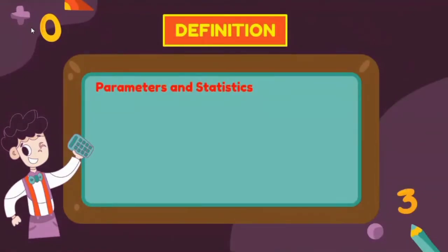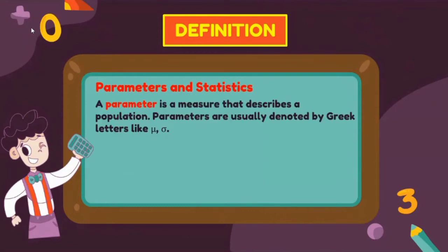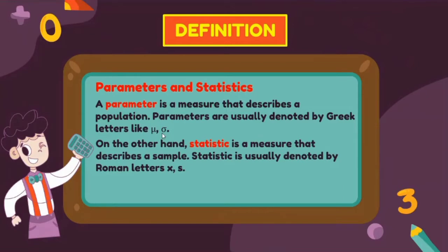To begin, let's define the following words. A parameter is a measure that describes a population. Parameters are usually denoted by Greek letters — we use the symbol μ (mu) to denote the mean of the population and σ (sigma) to denote the standard deviation of the population. On the other hand, a statistic is a measure that describes a sample. Statistics are usually denoted by Roman letters — we use x̄ for the sample mean and s for the standard deviation of the sample.